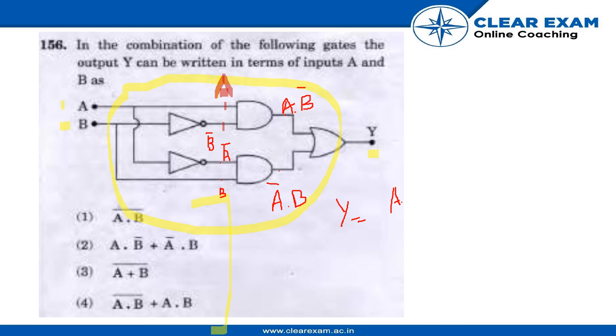A naught dot B plus A dot B naught. So the correct answer for this question will be 2. Let's see what's the correct answer. Yeah, the correct answer is 2. So thank you everyone.